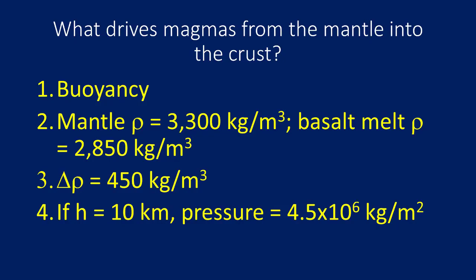What drives magmas out of the mantle? And the question again, or the answer again, is buoyancy. The mantle has a density of 3,300 kilograms per metre cubed, whereas basalt has a density of 2,850 kilograms per metre cubed. So the density difference is 450 kilograms per metre cubed.